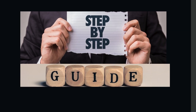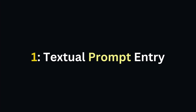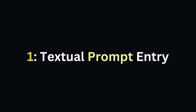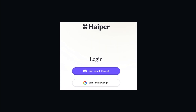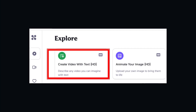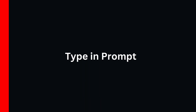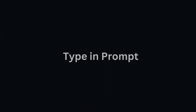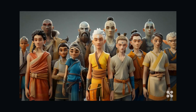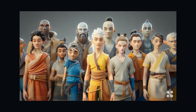Step-by-step guide. Step 1: Textual prompt entry. Sign in to HyperAI, click on 'Create video with text HD', and input your chosen prompt. An example could be: animated avatar characters, all together.